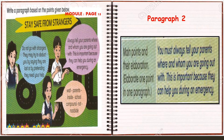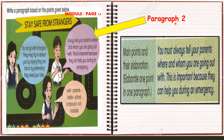Now let's start with paragraph 2. For paragraph 2, you have the main point and then the elaboration. You must always tell your parents where and whom you are going out with. And then: this is important because they can help you during an emergency. So this is for paragraph 2.